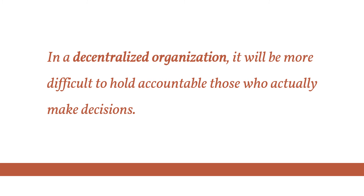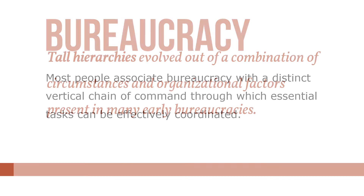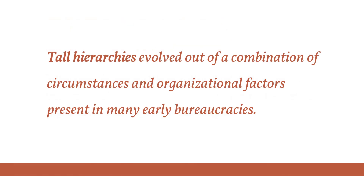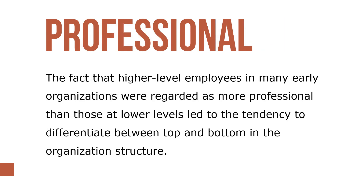However, there's another side of the coin: in a decentralized organization, it will be more difficult to hold accountable those who actually make the decisions. Most people associate bureaucracy with a distinct vertical chain of command through which essential tasks are effectively coordinated. Tall hierarchies evolved out of a combination of criticisms and organizational factors present in many early bureaucracies. The principle known as span of control, combined with task diversity and interdependence of activities, contributed to the overall growth of tall hierarchy.